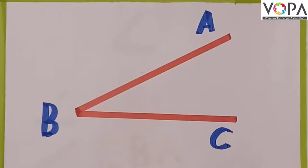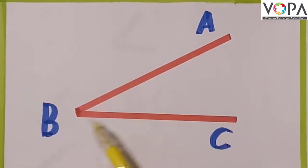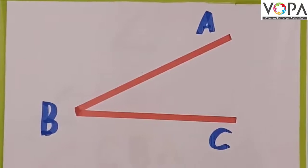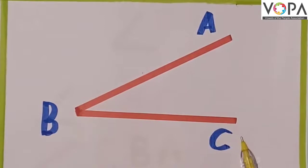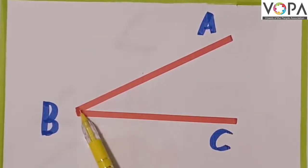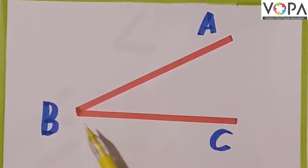Look at this angle. Read the lines of this angle — line BA and line BC. Which is the common point in line BA and line BC? B is the common point of line BA and line BC. This common point is called the vertex. Vertex.